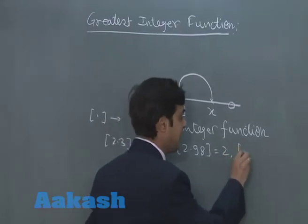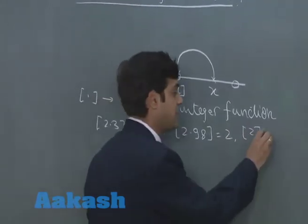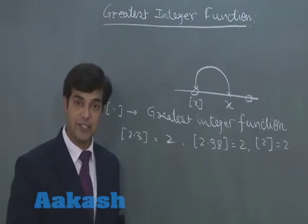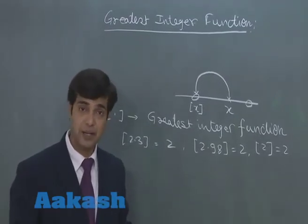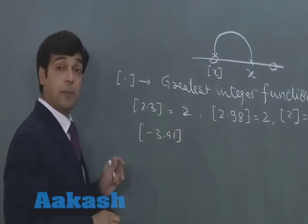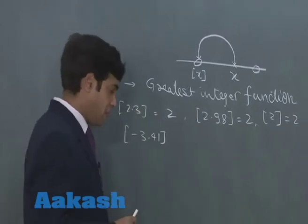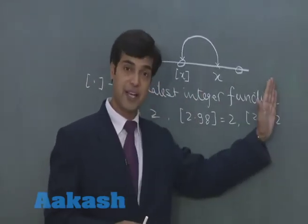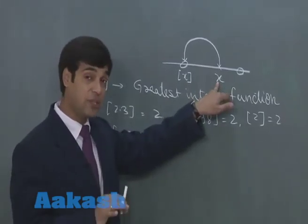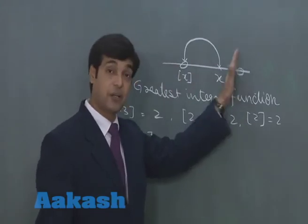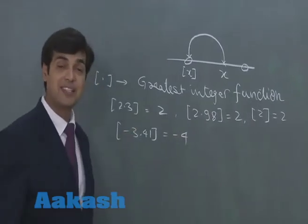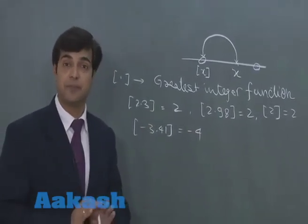If the number taken is an integer itself — for example, greatest integer of 2 — that is also equal to 2, because when x is already an integer, you don't need to go to the previous one; you pick that number itself. Now let's take a negative example: minus 3.41. On the number line, minus 3.41 lies between minus 4 and minus 3, so the previous integer is minus 4. This is how we define the greatest integer function.